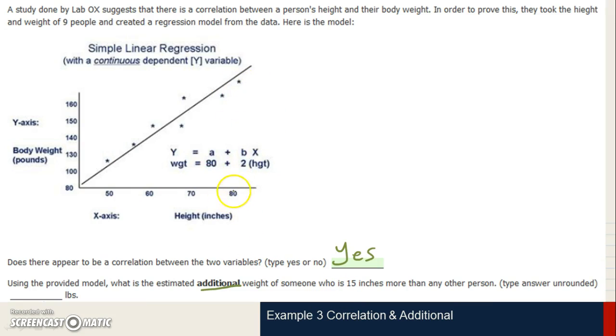Well, the tallest person that we have on this data point is 80. So if we're talking about somebody who's 15 inches more, well, 15 inches more than 80 would be, if we extended this line, somewhere like 95.